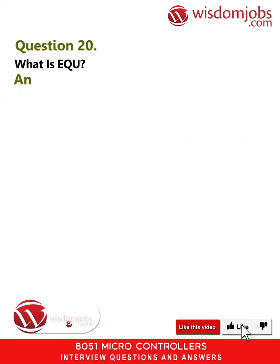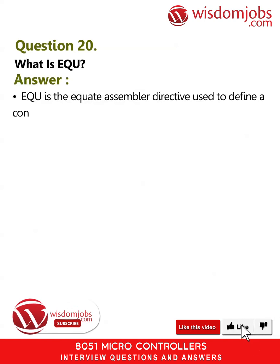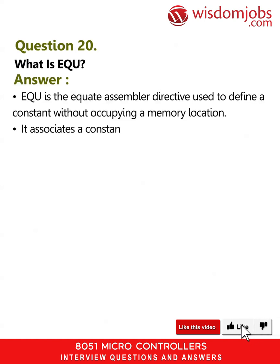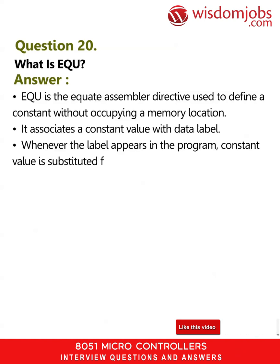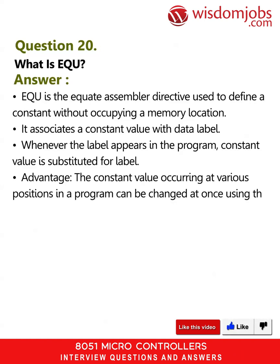Question 20: What is EQU? Answer: EQU is the equate assembler directive used to define a constant without occupying a memory location. It associates a constant value with a data label. Whenever the label appears in the program, the constant value is substituted for the label. Advantage: the constant value occurring at various positions in a program can be changed at once using this directive.